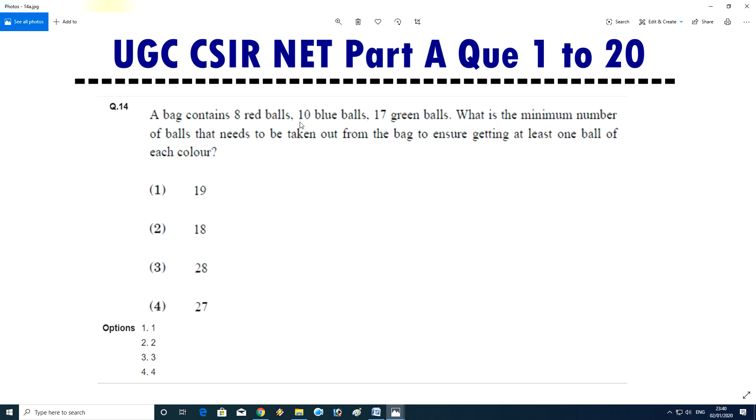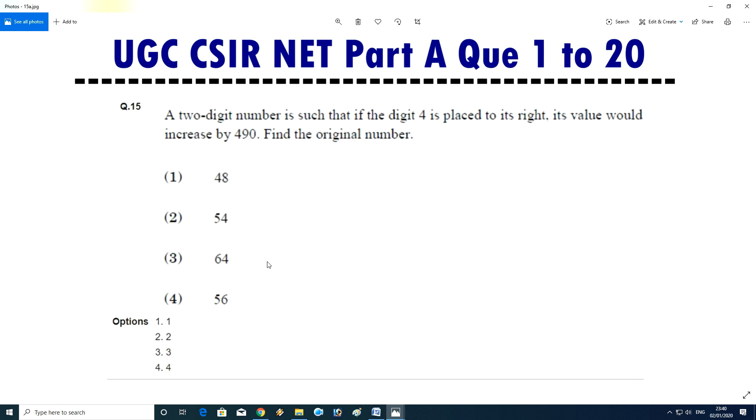Question number 14: a bag contains 8 red balls, 10 blue balls, and 17 green balls. What is the minimum number of balls that need to be taken out from the bag to ensure getting at least one ball of each color? Answer is third, 28. Question number 15: a two digit number is such that if the digit 4 is placed at its right, its value would increase by 490. Find out the original number. Answer will be 54, B.